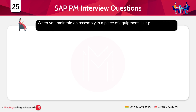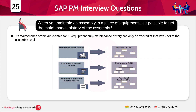When you maintain an assembly in a piece of equipment, is it possible to get the maintenance history of the assembly, or do you have to create it as a piece of equipment? Since maintenance orders are created for the FL or equipment only, maintenance history can only be tracked at that level, not at the assembly level. Assemblies are mere structuring devices to link spare parts to equipment in a structured manner. However, in PM orders you can mention the assembly along with the FL or equipment, and ABAP can use the PM assembly field in PM orders for reporting.